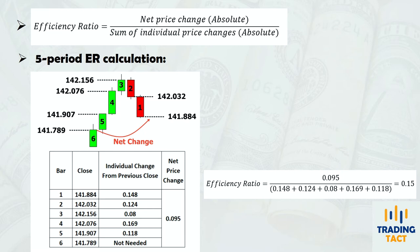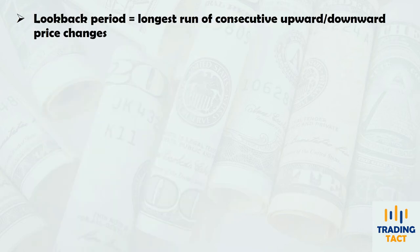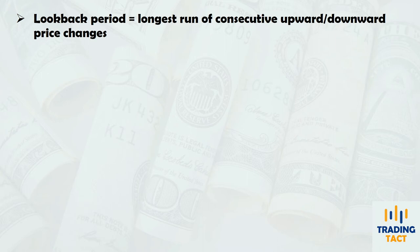Your efficiency ratio lookback period should be equal to the longest run of consecutive upward or downward price changes. So for example, if your market has a maximum of 10 consecutive upward closes, use a lookback period of 10.